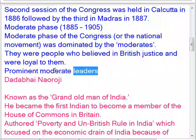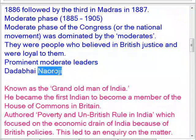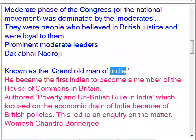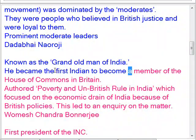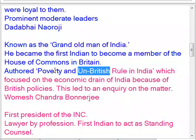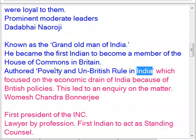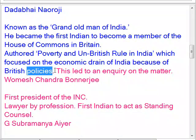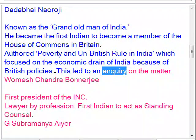Prominent moderate leaders: Dadabhai Naoroji, known as the Grand Old Man of India. He became the first Indian to become a member of the House of Commons in Britain. He authored 'Poverty and Un-British Rule in India,' which focused on the economic drain of India due to British policies, and this led to an inquiry on the matter.